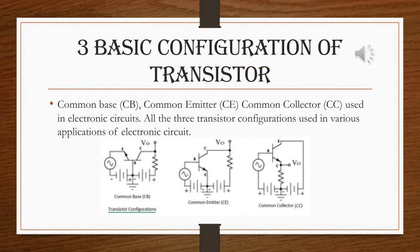What are the three basic configurations of a transistor? We have common base, common emitter, and common collector, which are commonly used in electronic circuits. All three transistor configurations are used in various applications of electronic circuits.